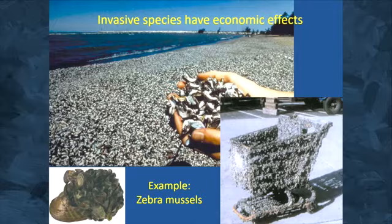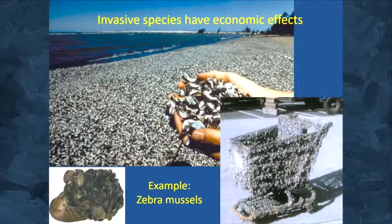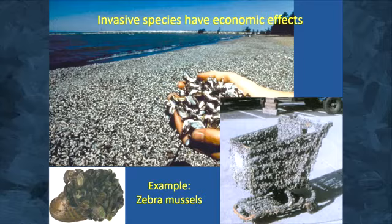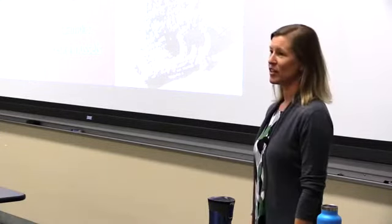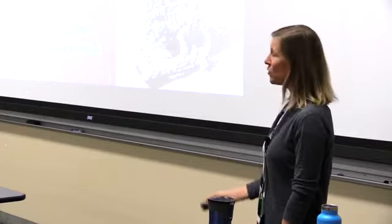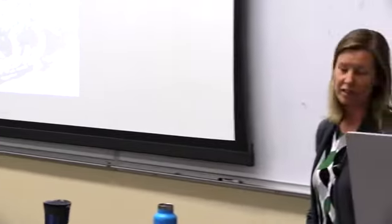Here's a picture of a beach completely littered with their sharp shells after the animals die — they often make beaches unusable. Here's a bunch of zebra mussels using a larger native mussel as a substrate, having adverse effects on native fauna. They just colonize everything — they will clog sewer drain pipes and all kinds of structures. We spend millions of dollars a year removing these zebra mussels from different structures.